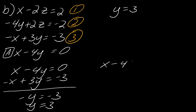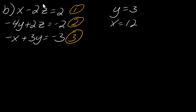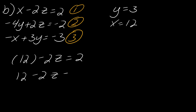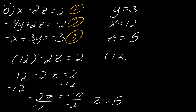Eliminating the x's gives negative y equals negative 3, so y equals 3. You can see that when variables are missing, this is a much quicker process. Plugging y equals 3 into the first equation: x minus 4 times 3 equals 0, so x minus 12 equals 0, giving x equals 12. Now I plug x equals 12 into the first original equation to find z: 12 minus 2z equals 2, so negative 2z equals negative 10, and z equals 5. The ordered triple is 12, 3, and 5.